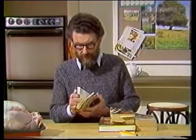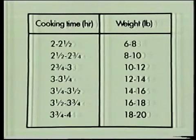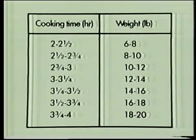The obvious thing to do is to look this question up in a cookery book. But the difficulty is we've got lots of cookery books in our kitchen and they all give different answers. Here's one: two to two and a half hours for a six to eight pound turkey; two and a half to two and three quarter hours for an eight to ten pound one; three and three quarter to four hours for an eighteen to twenty pound turkey. So according to this cookery book, it's going to take about four hours.